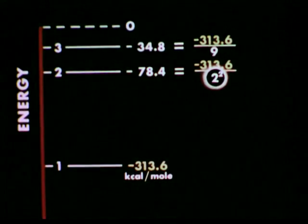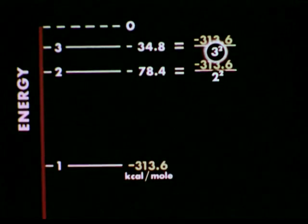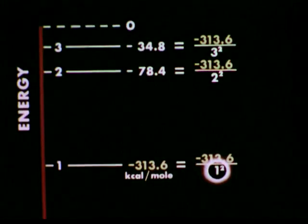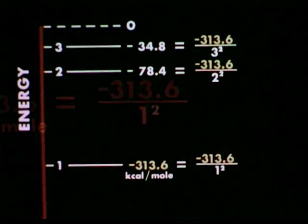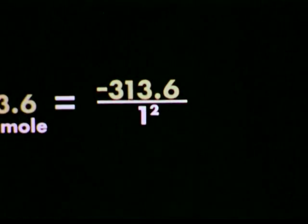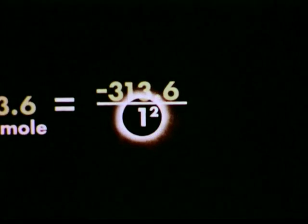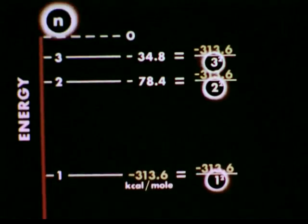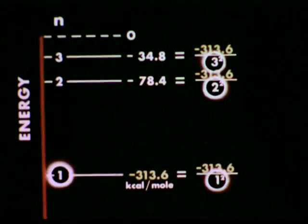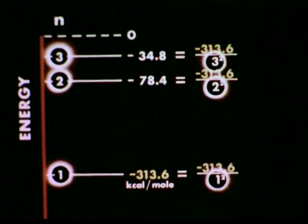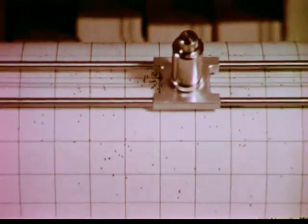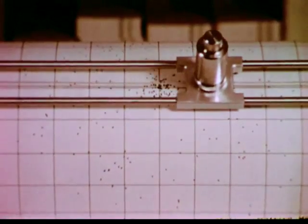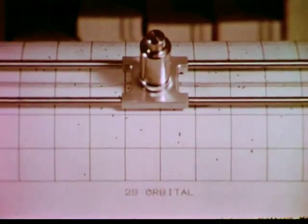Thus, 4 is 2 squared, 9 is 3 squared. The lowest energy is 313.6 divided by 1 squared. We can characterize each energy level by this integer in the denominator. The integers are possible values of the principal quantum number, n. And we can use the integers to label the energy levels.